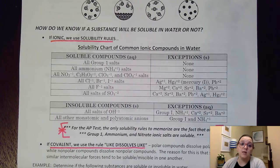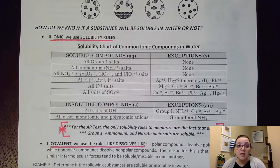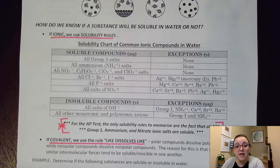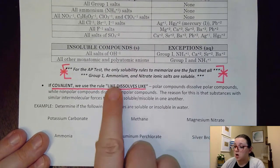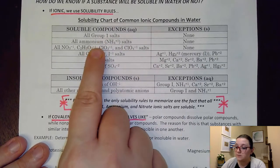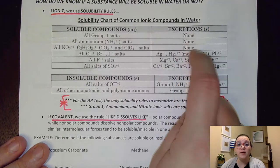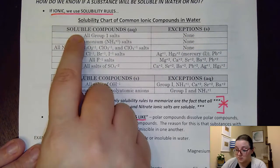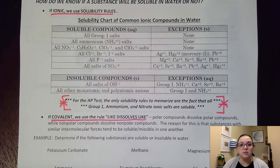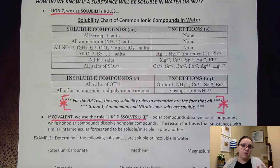If our substance is ionic, we can use solubility rules — a table of various categories to determine if an ionic compound will be soluble. Different textbooks may have slightly different versions of this chart, but for the AP test you want to know that all group one, ammonium, and nitrate ionic compounds are soluble — those are the first three rules with no exceptions. Once a substance is soluble it gets the AQ designation, meaning it dissolves in water. This chart technically applies to any polar solvent.